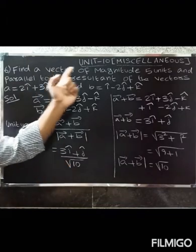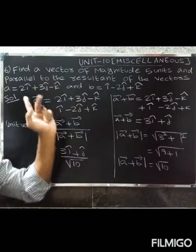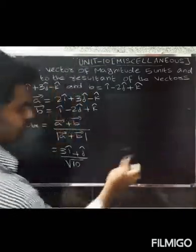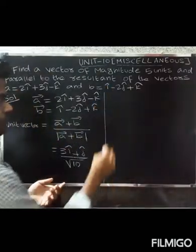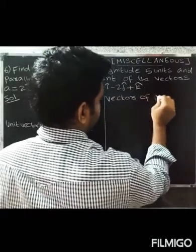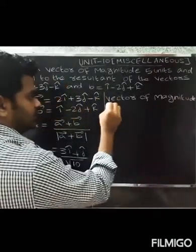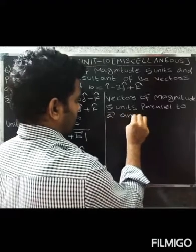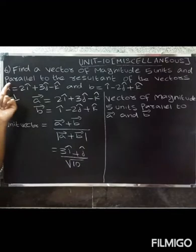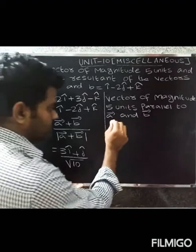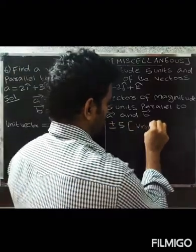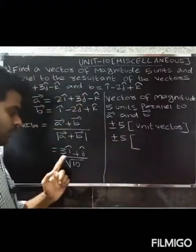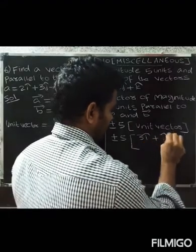Now applying the condition: find the vector of magnitude 5 units parallel to the resultant. A vector of magnitude 5 parallel to a unit vector equals plus or minus 5 times the unit vector, so plus or minus 5 into (3î + ĵ) divided by √10.